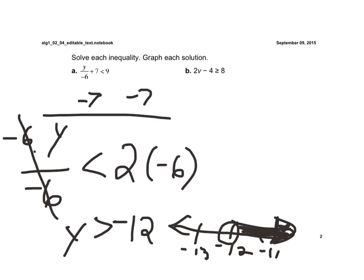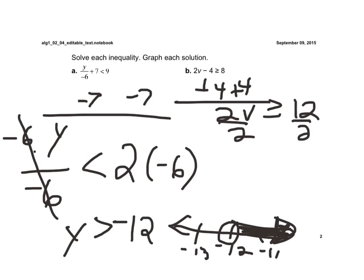Example 2, we're going to go ahead and add 4 to both sides first. And we get 2v is greater than or equal to 12. And now we divide by 2. And we get v is greater than or equal to 6. And we don't have to worry about reversing the inequality sign there because we divided by a positive 2.